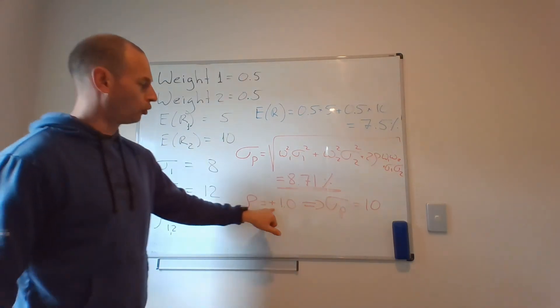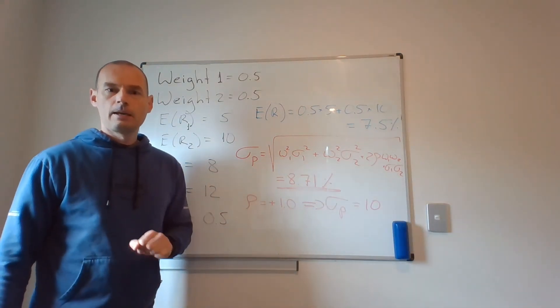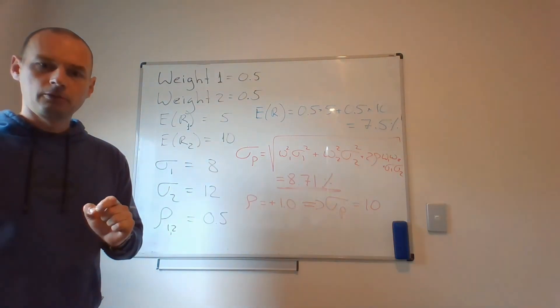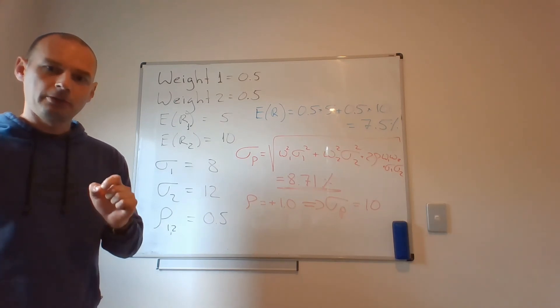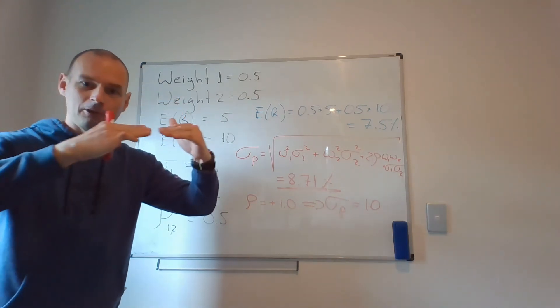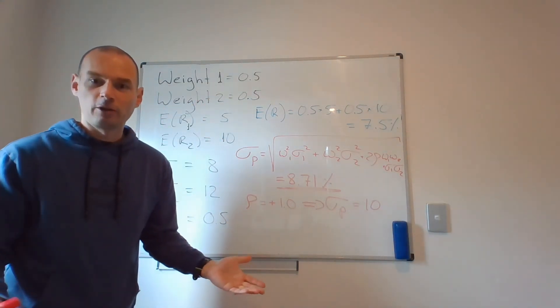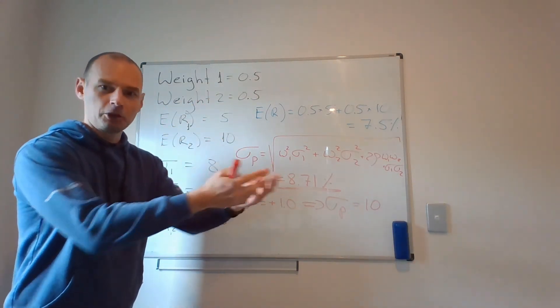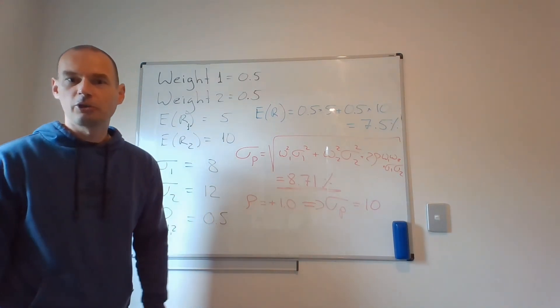So correlation coefficient of plus 1 is the only scenario in which diversification actually does not work. Why? Because you are putting together two assets that simply move with each other, move perfectly. And putting 2 instead of 1 simply makes no sense.